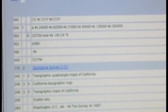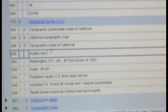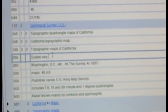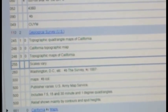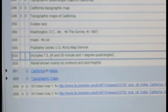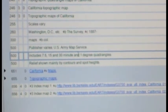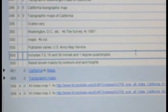Which in this case says scales vary because this is a record for four different topographic map series in the state of California. Seven and a half, 15 minute, 30 minute, and the one degree quadrangles. So...